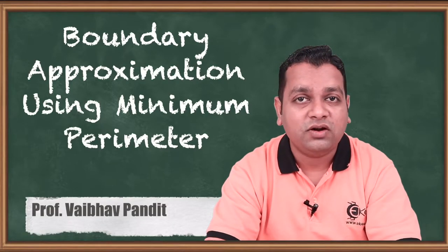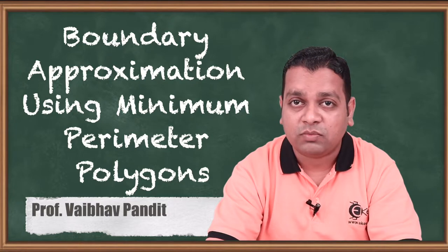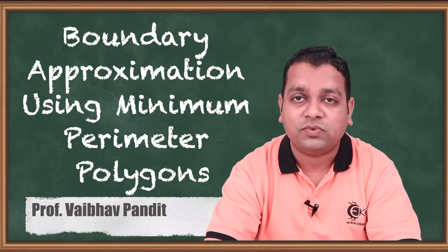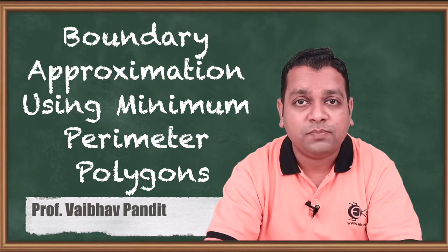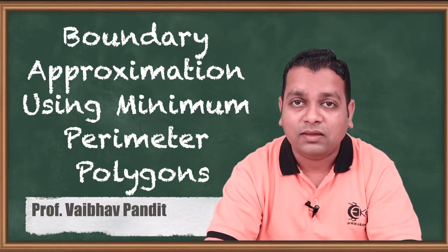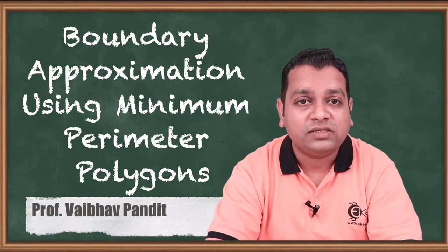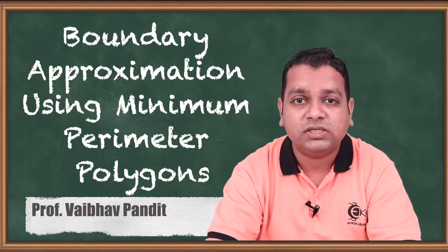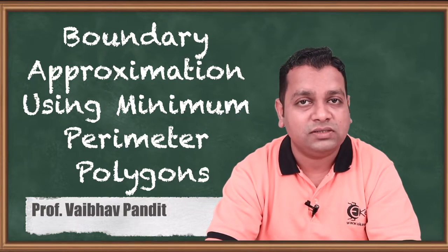Hello friends, this is the third video from chapter 12, Representation and Description, in our digital image processing subject. Earlier we covered the simple boundary following and representation technique using chain codes. Let us now discuss boundary approximations using minimum perimeter polygons.